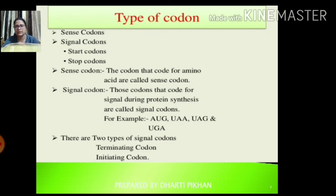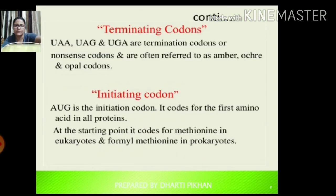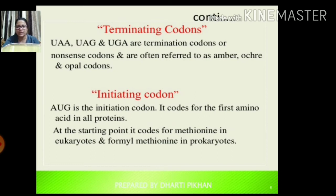There are two types of signal codons: terminating codons and initiating codons. Terminating codons are also called nonsense codons and are referred to as amber, ochre, and opal codons. The initiating codon is AUG — this is the codon that codes for the first amino acid in all proteins. At the starting point it codes for methionine in eukaryotes, and for formyl-methionine in prokaryotes.